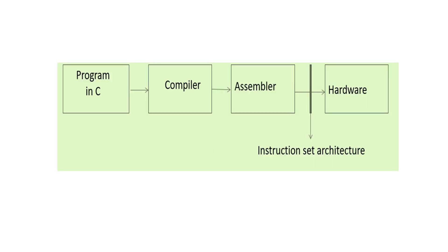This is where instruction set architecture comes in. The ISA defines how assembly code should be converted to zeros and ones by the assembler, and in what way it should convert, so that the particular hardware understands the sequence of zeros and ones — since the ISA defines the specifications of that particular hardware.